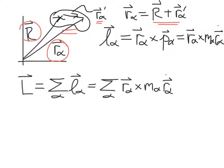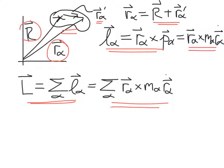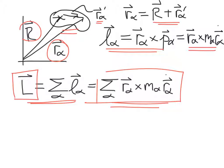We can write the angular momentum of particle alpha as this cross product, and the total angular momentum of the system is just the sum of the angular momentum for each individual particle. This sum actually reduces to two terms, which allows us to express the angular momentum of the system as the angular momentum of the center of mass relative to our coordinate system, plus the angular momentum relative to the center of mass.